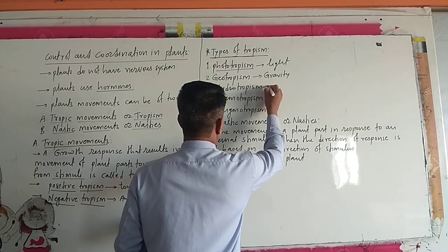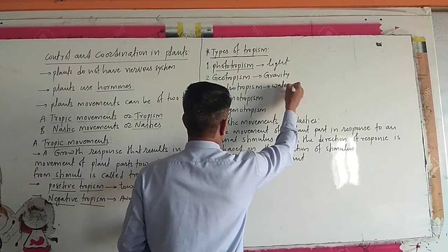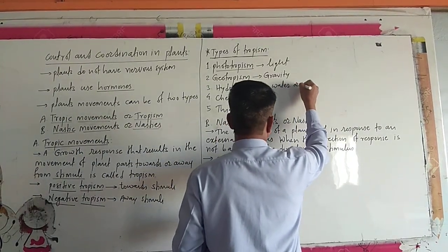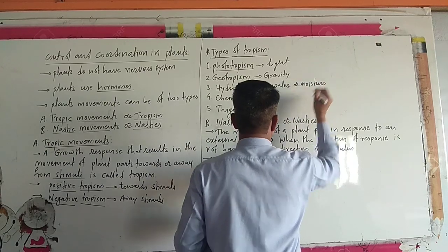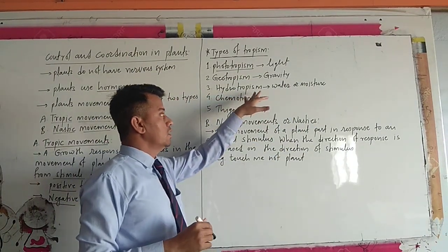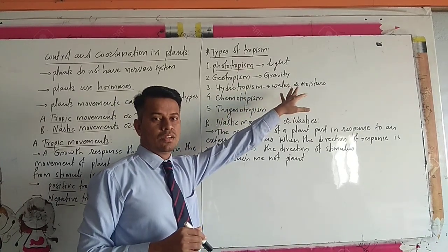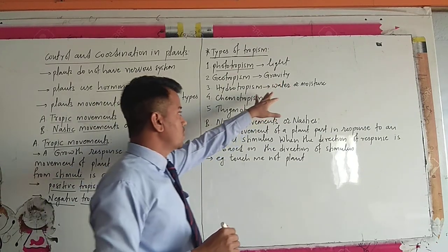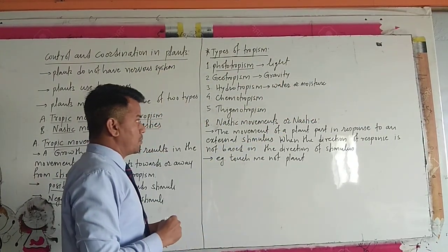Then hydrotropism. It is sensitive to water or moisture. Hydrotropism means the movement or growth of plant parts towards water or moisture, taking it inside the plant body.